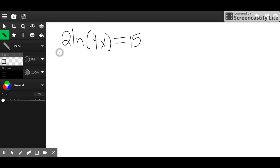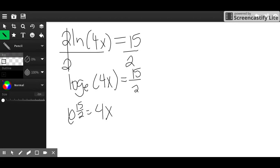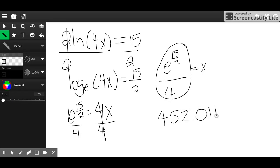Now we're doing natural logs using your calculator. I'm just going to divide by 2. Log of e of 4x, because I know that natural logs is really just log of e. Raise e to 15 halves equals 4x. Divide by 4. Plug that into your calculator, and you should come out with 452.011 as x.